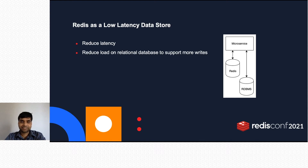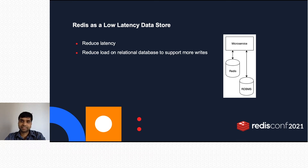Redis as a cache is a common pattern in microservices architecture. Redis is used as a caching layer in between the application and RDBMS. This helps to reduce the latency to access information since Redis has sub-millisecond latency. Another benefit of this approach is that it reduces the number of read calls to RDBMS. Since this reduces the load on RDBMS, it allows RDBMS to support more writes.